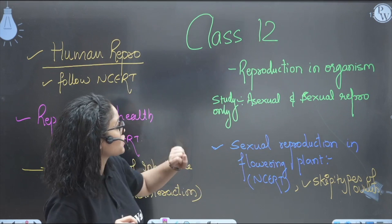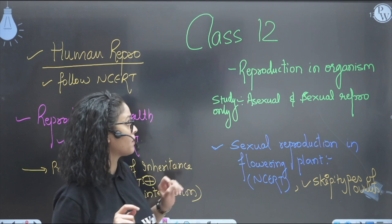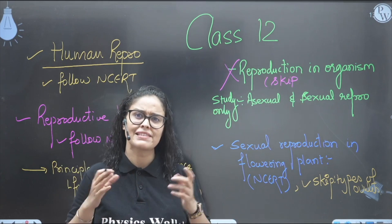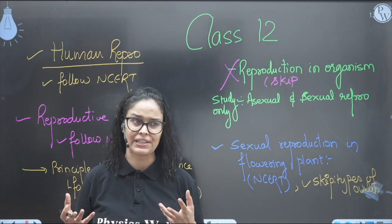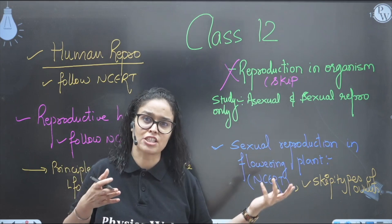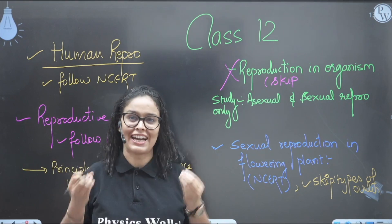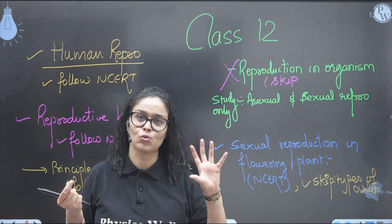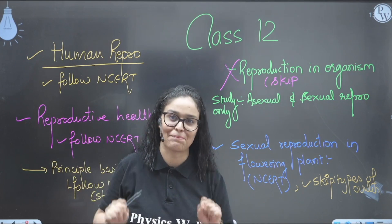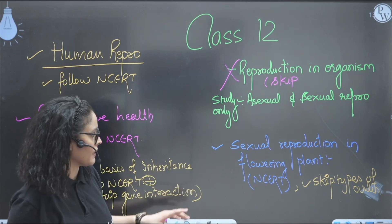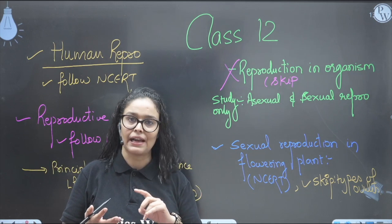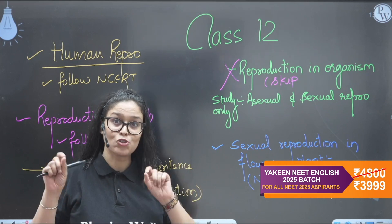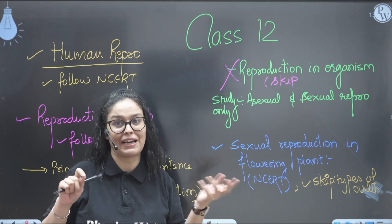For Class 12th, in reproduction in organisms, study asexual and sexual reproduction only - you can skip the full chapter otherwise as it is not in the new NCERT. These are basic concepts that appear in different chapters of animal kingdom and plant kingdom. You can also look at diagrams of Marchantia and Chara given in this chapter, since those concepts are used in Class 11th botany.